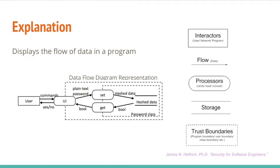An arrow represents the flow of data. Anything being passed from one part of a program to another will be represented by an arrow.